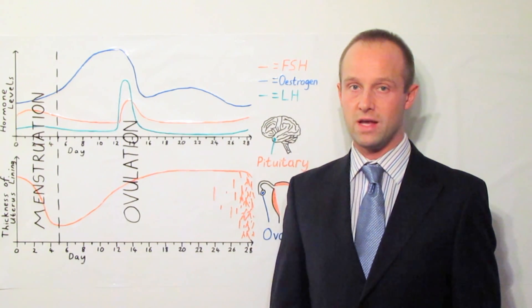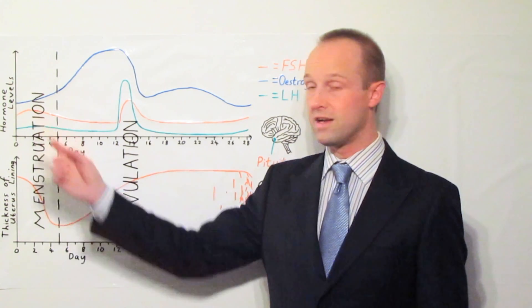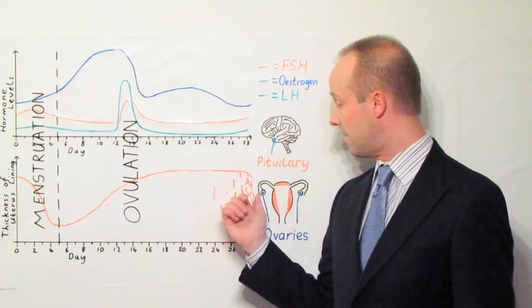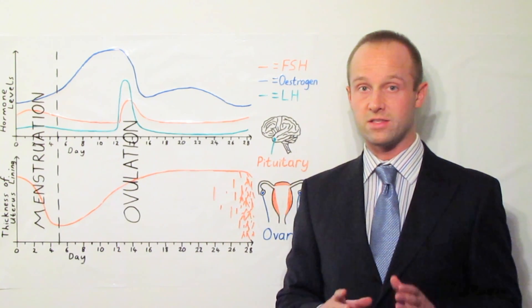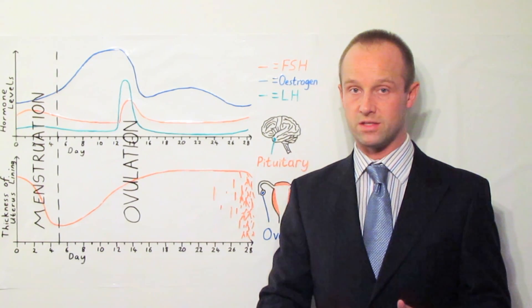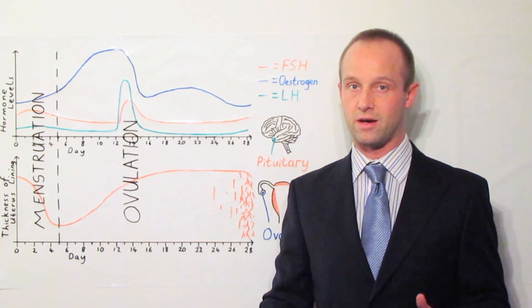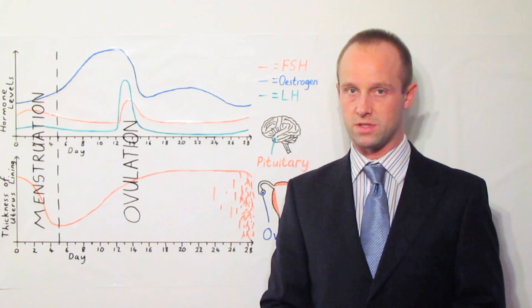What both of these do is they stop the FSH from stimulating follicles in the ovaries and they stop them producing mature egg cells. It basically stops the egg cells maturing so that they can't be released and so that they can't be fertilized.